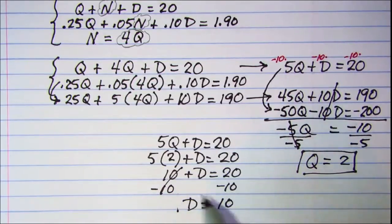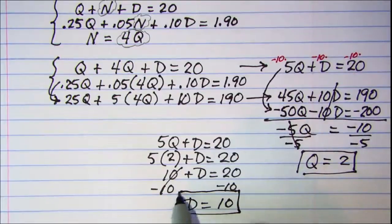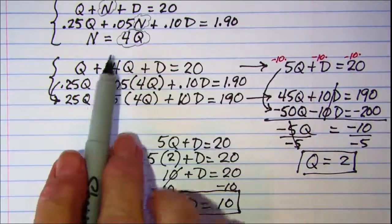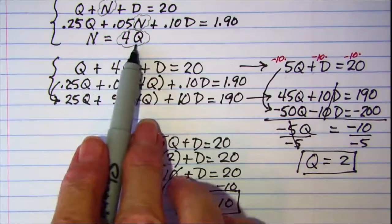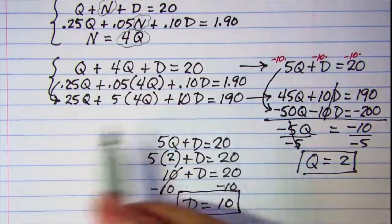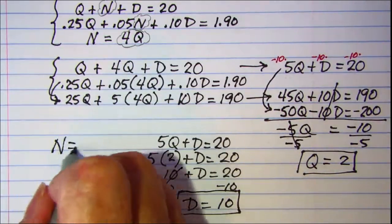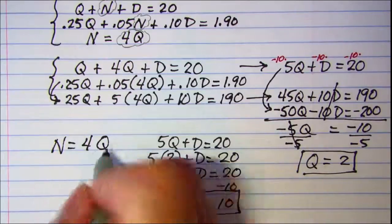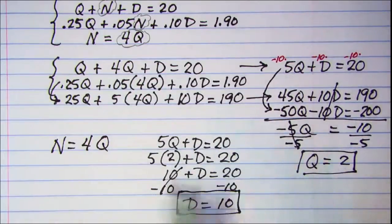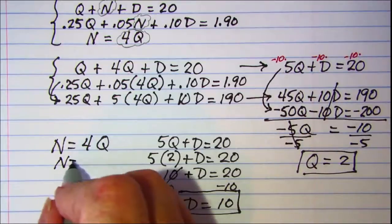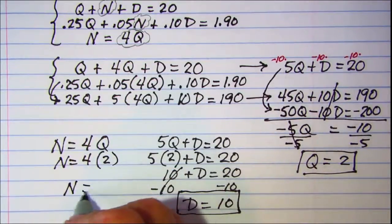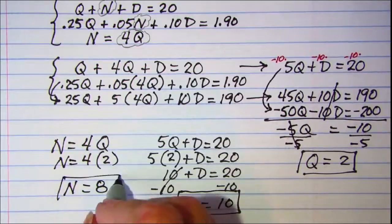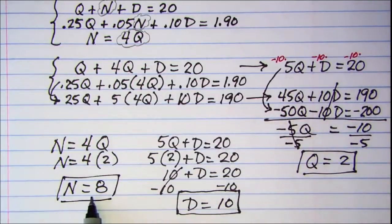So I have the value for D and Q, I still need N, and I think the easiest place to sub that back in would be here, N equals 4 times Q, and I know that Q is 2, so N equals 4 times 2, N equals 8, so I have 8 nickels, 10 dimes, and 2 quarters.